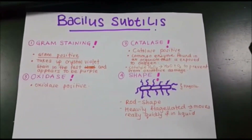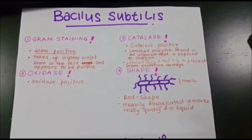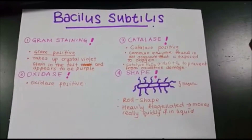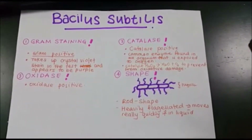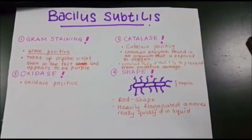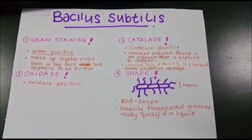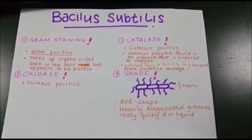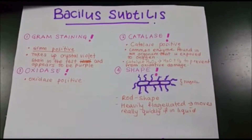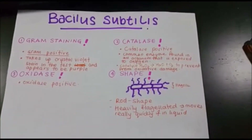Bacillus subtilis is a gram-positive bacteria. In a gram-staining test, gram-positive bacteria take up the crystal violet stain and appear purple under the microscope. This is due to the thick peptidoglycan layer in the cell wall that retains the stain after the decolorization step. It is oxidase positive and catalase positive. Catalase is a common enzyme found in organisms exposed to oxygen that catalyzes hydrogen peroxide to water and oxygen to prevent oxidative damage. It is rod-shaped and heavily flagellated, which helps it move quickly in liquid.